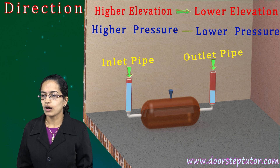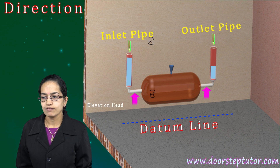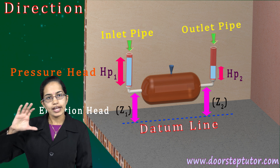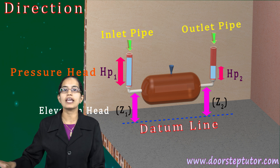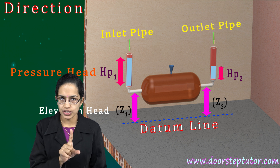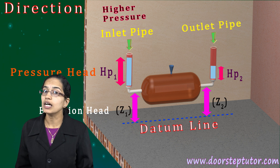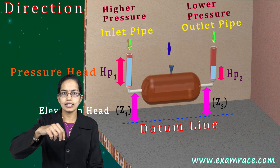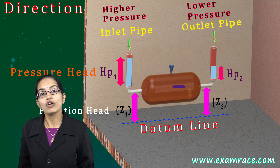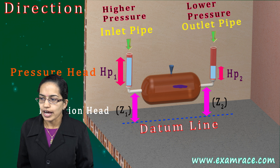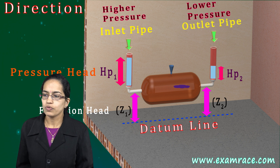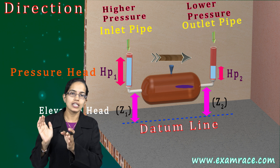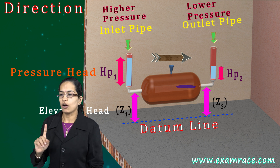Two components are taken into account: the datum line and elevation head on both sides, and the pressure component. If the elevation component remains the same for inlet and outlet, the only change would be seen in the pressure component — higher pressure at inlet and lower at outlet. If a blue colored dye is placed in the sand, it would slowly and gradually start moving from higher pressure toward lower pressure, and that is how we understand the direction of flow.